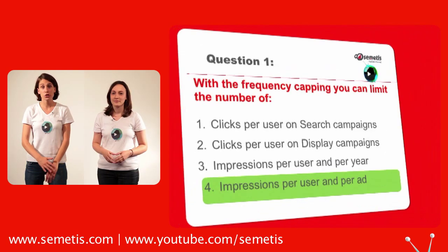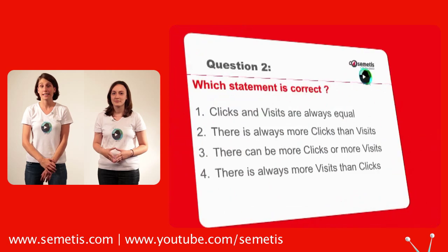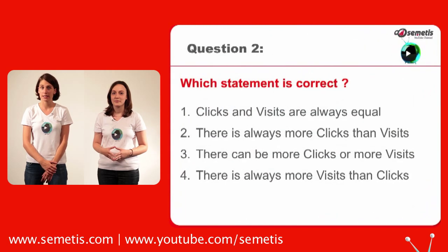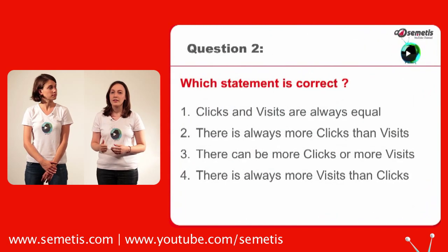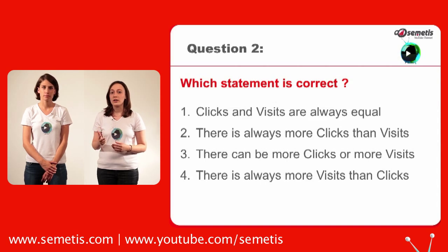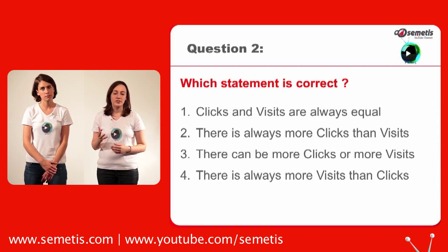Question two: which statement is correct? Clicks and visits are always equal, there is always more clicks than visits, there can be more clicks or more visits, or there is always more visits than clicks? The right answer is there can be more clicks or more visits.